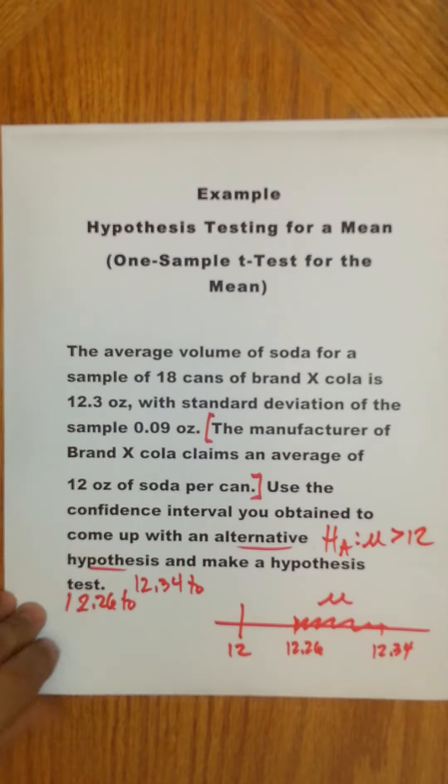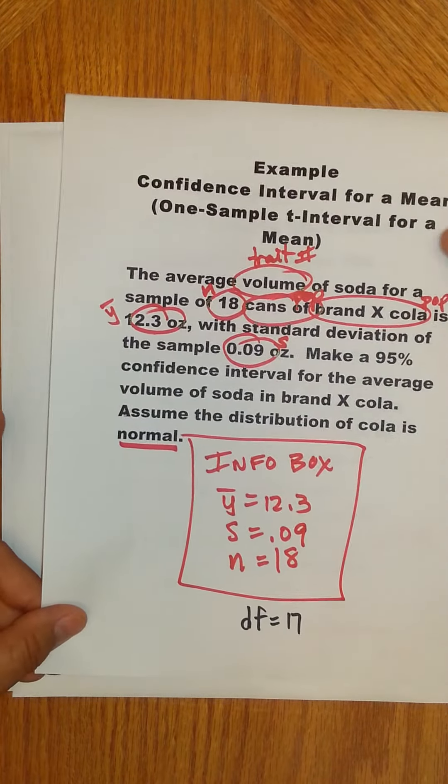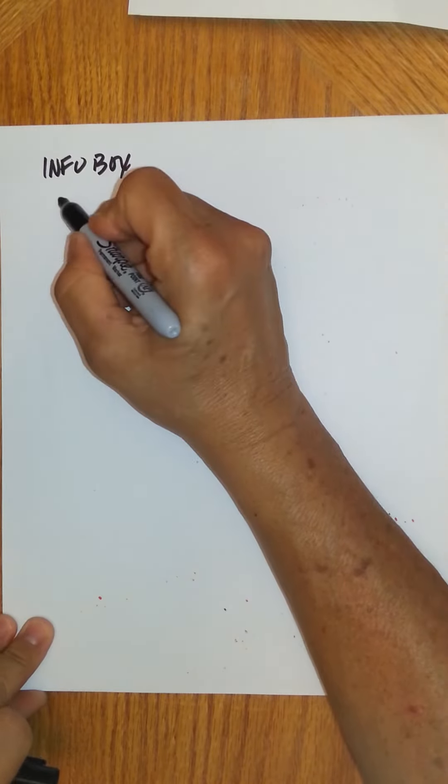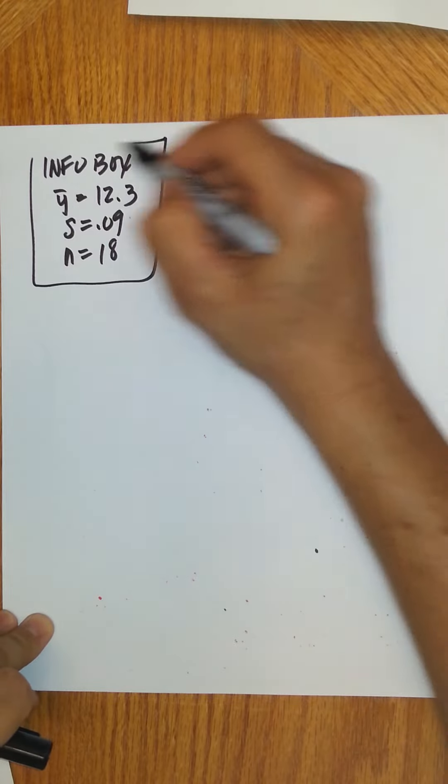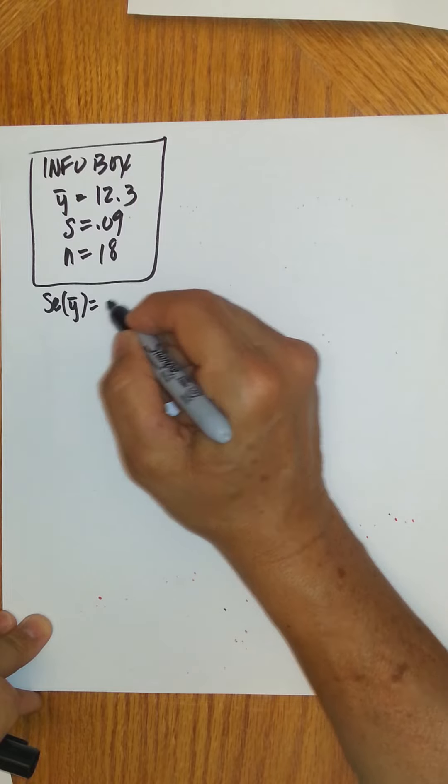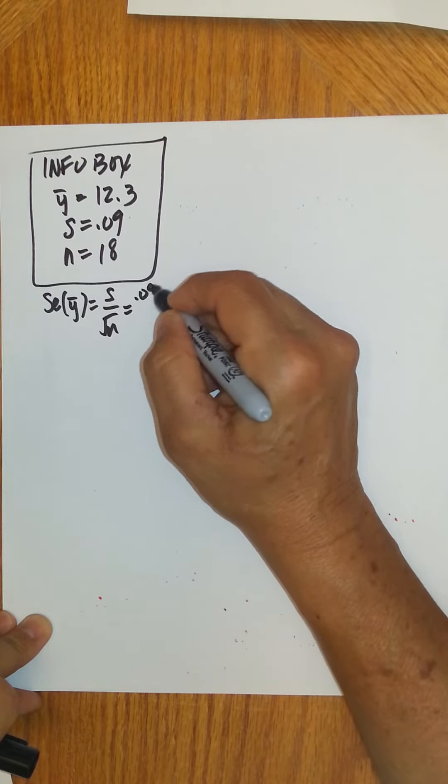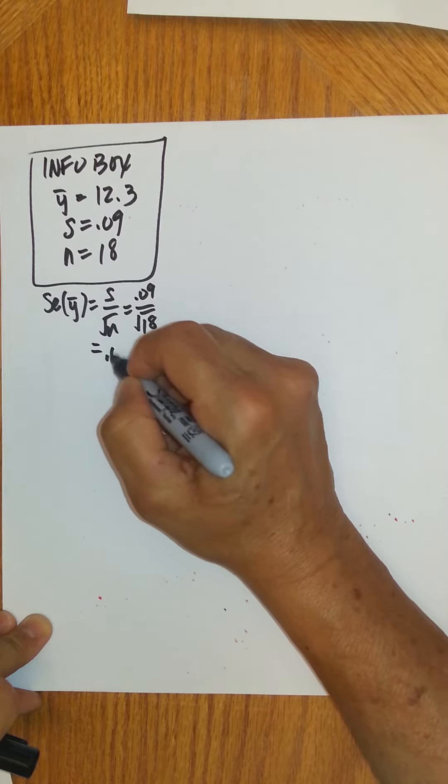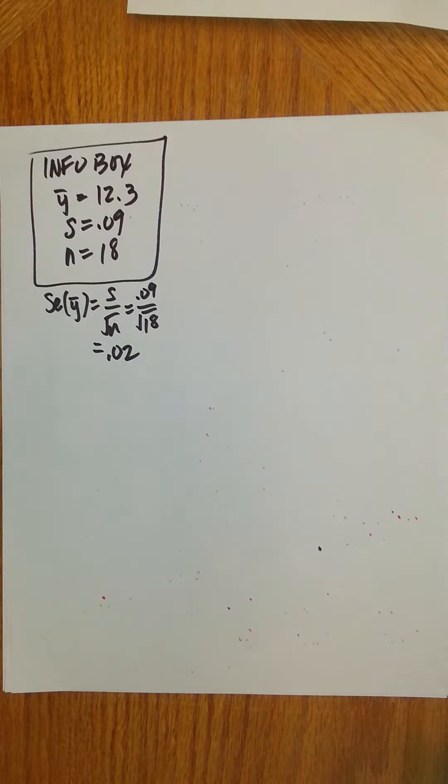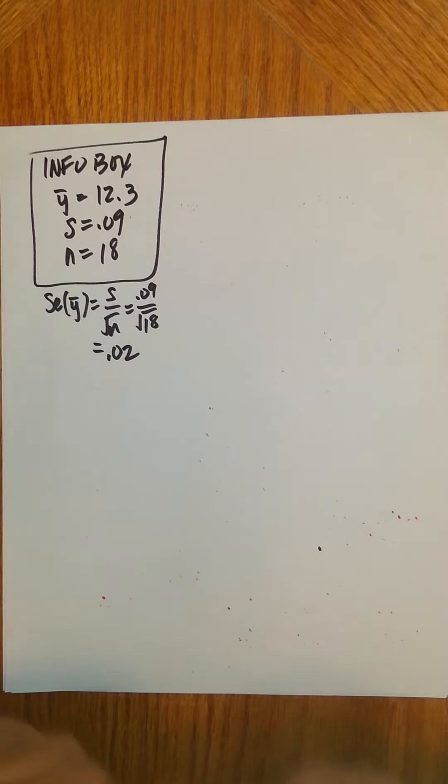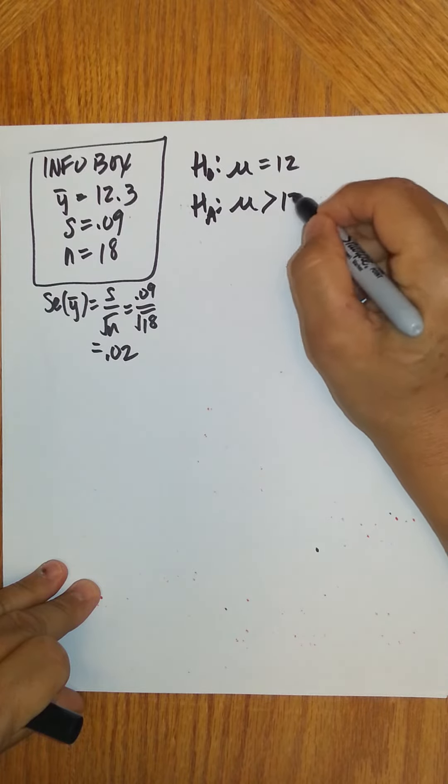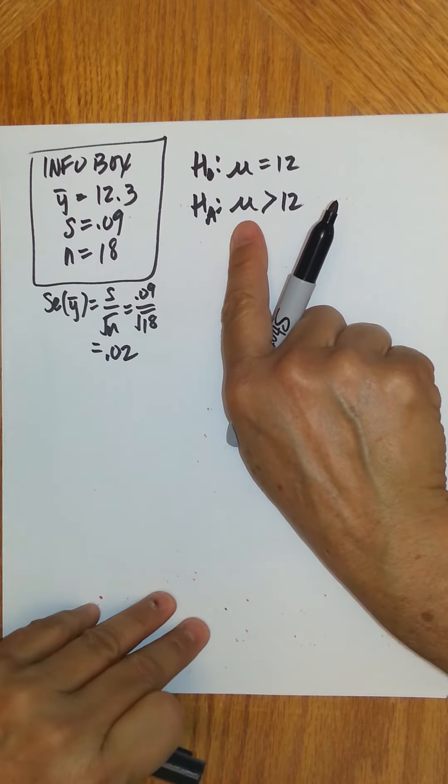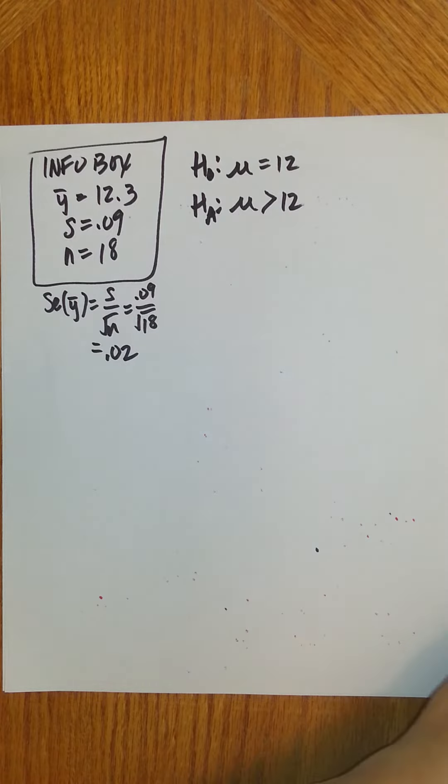Remember, the info box is still the same here. Y bar is 12.3, S is 0.09, N is 18. And when we found standard error of Y bar, that's S over square root of N, which is 0.09 over square root of 18, which we got was 0.02. We're going to start out, and our hypothesis then is we believe that the average amount of cola in all brand X soda is more than 12 ounces, and the manufacturer claims that it is 12 ounces.